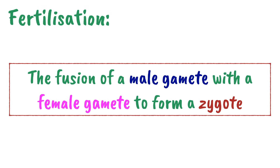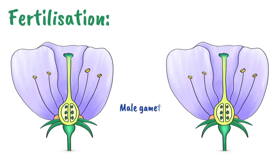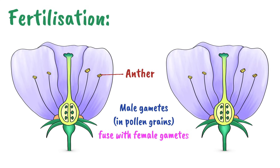Fertilization is the fusion of a male gamete with a female gamete to form a zygote. In flowering plants, the male gametes are found in pollen grains, produced in the anthers, while the female gametes are found in the ovules.